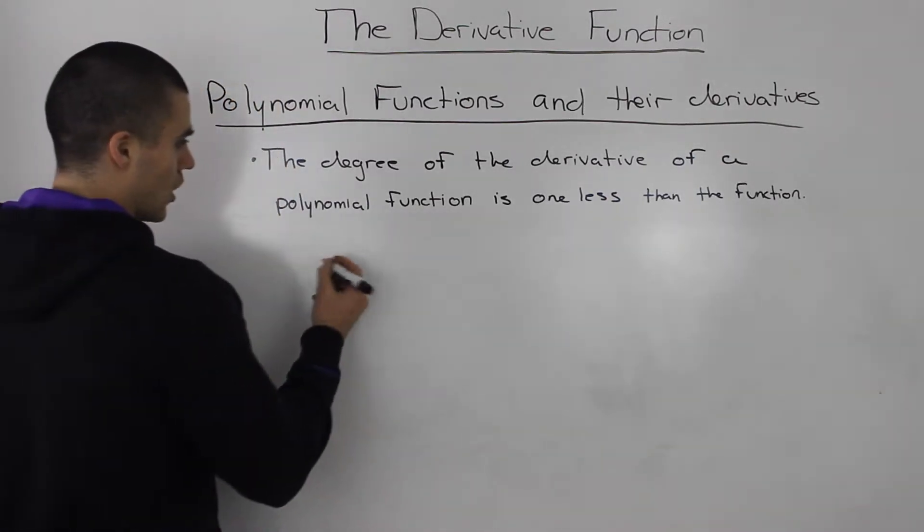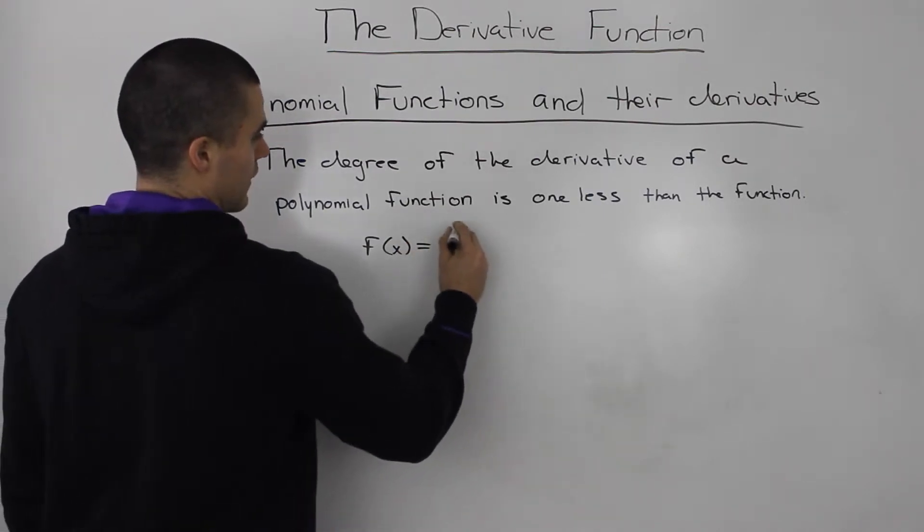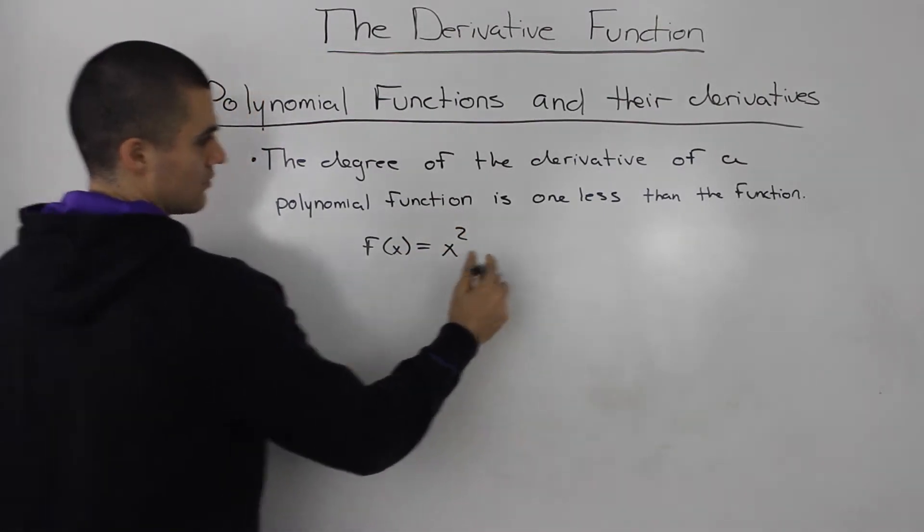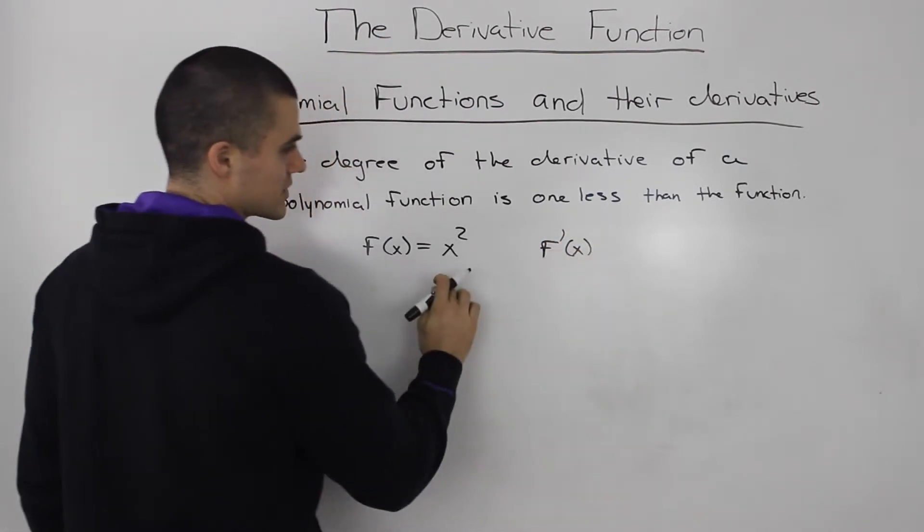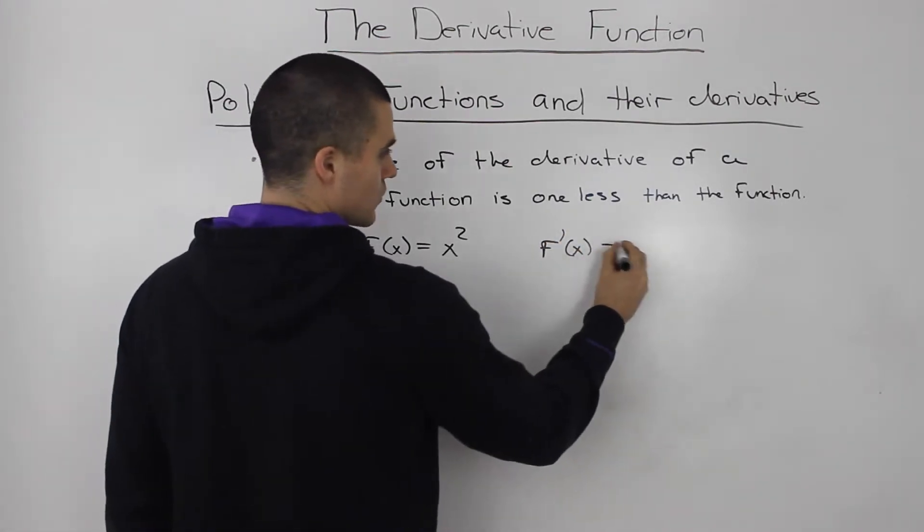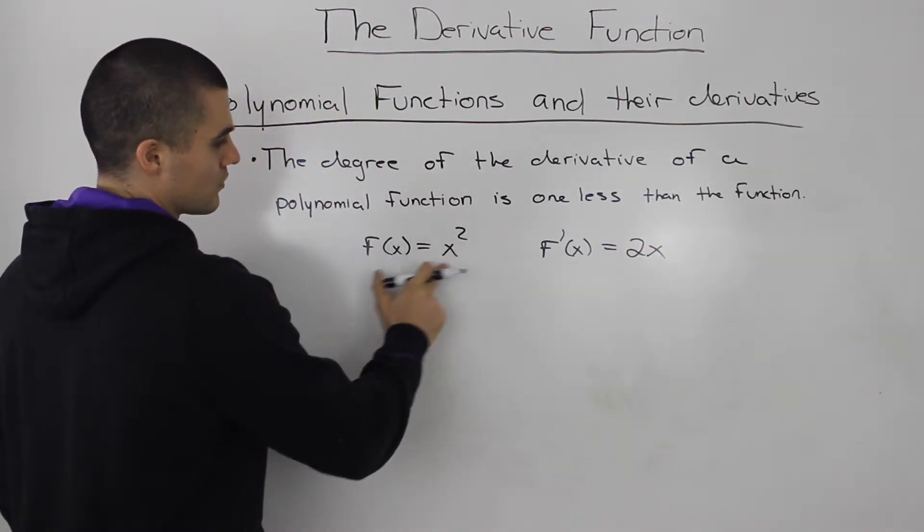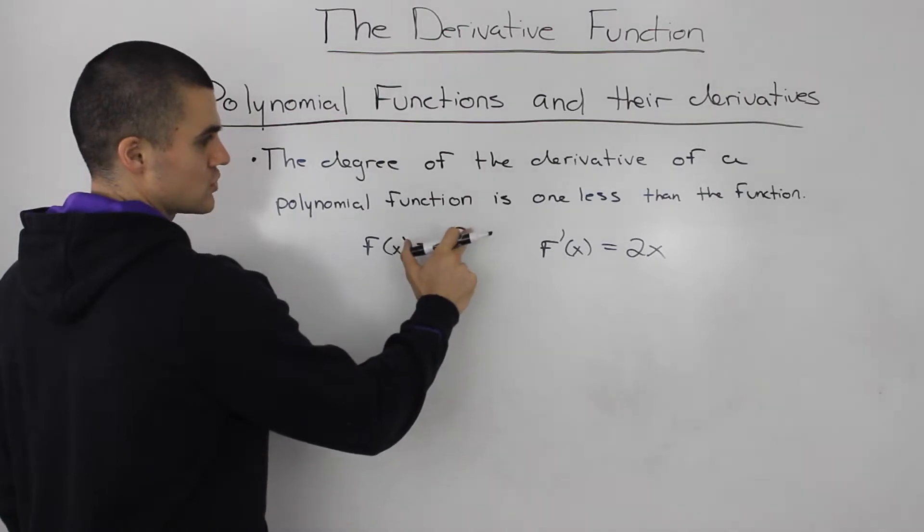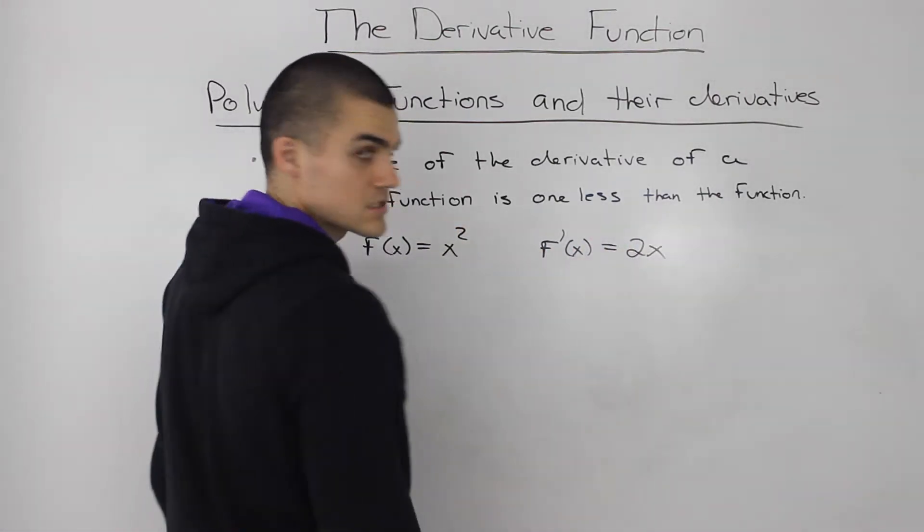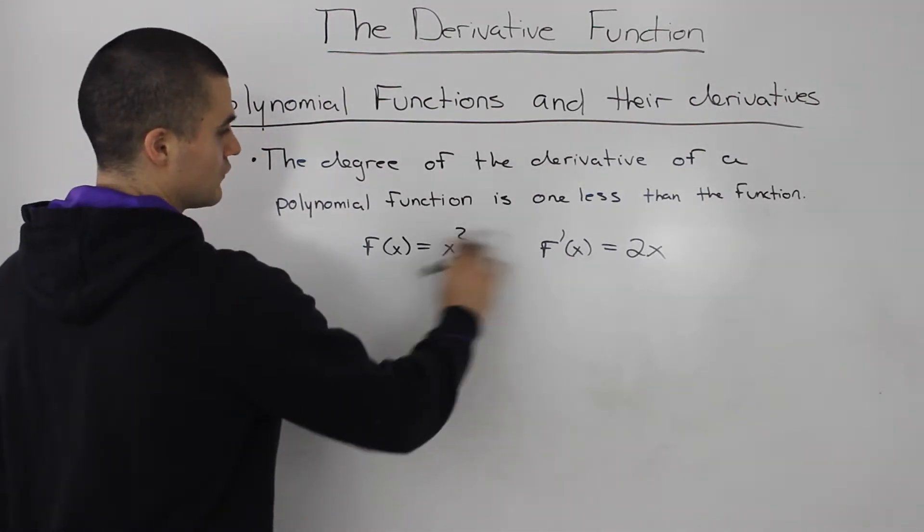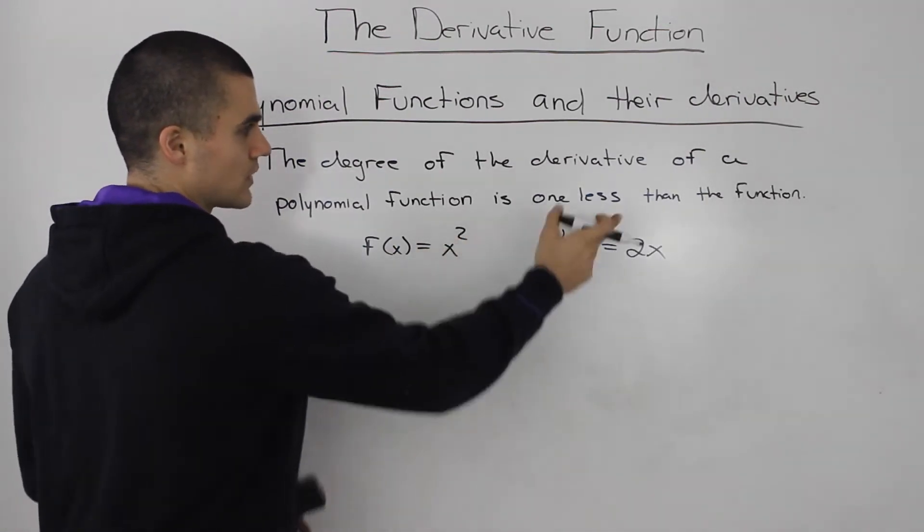If you recall, when we had our example of x squared, when we found the derivative of x squared using the difference quotient, we ended up with 2x. Notice how this function has a degree of 2, and the degree of the derivative is 1. So the derivative of a polynomial function is always one less than the function.